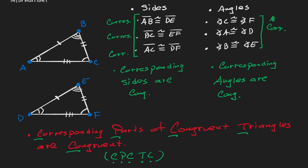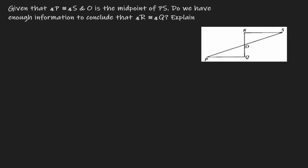Now let's use this idea with one example. We know that angle P and angle S are congruent to each other, and that O is the midpoint of line segment PS. We want to see if we have enough information to conclude that angle R and angle Q are congruent. Notice that this problem does not say proof, so we just need to explain what's going on.